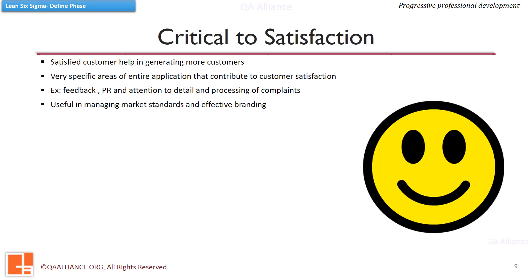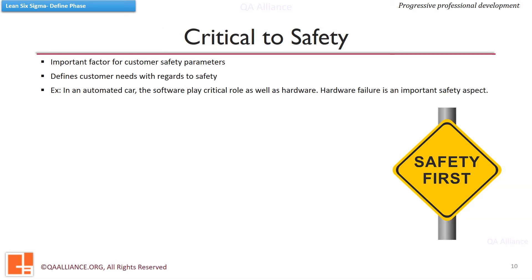As word of mouth helps in business success, customer satisfaction is a critical parameter. We should identify specific areas of the product or service that contribute to customer satisfaction — such characteristics are useful in managing marketing standards and help in effective branding. We should also identify parameters which are important from a safety aspect. For example, for an automated car, software is as critical as its hardware — any one of them not working may cause a serious impact. It becomes very important, while defining critical to quality parameters, that we also identify all other CTXs as well.